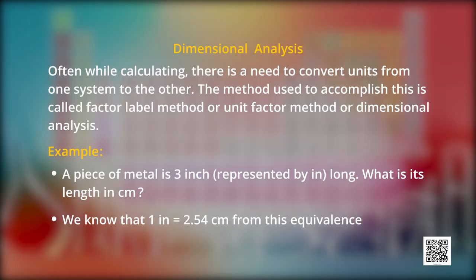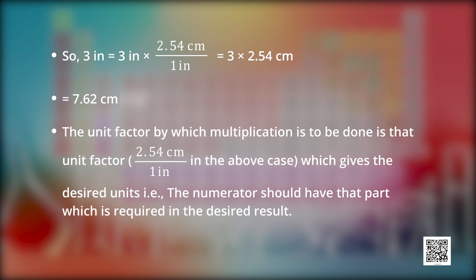Children, when we perform mathematical calculations, we need to convert units from one system to another. This can be done by a method called factor label method, or unit factor method, or dimensional analysis. Let us understand this through an example. Assume that we have to convert the length of a piece of a metal from 3 inches to centimeter. We know that 1 inch is equal to 2.54 centimeter. 3 inches will be equal to 3 multiplied by 2.54 centimeter, which will be equal to 7.62 centimeter. Friends, try to do more conversions which are given in your book.